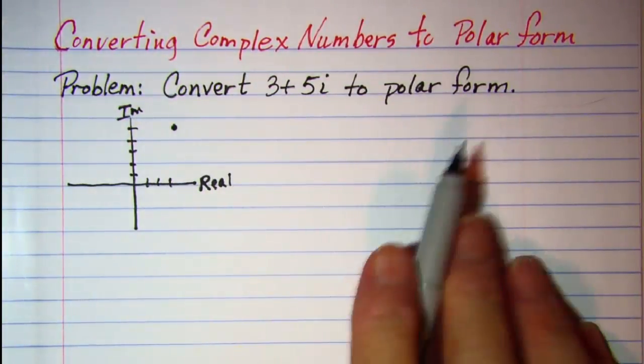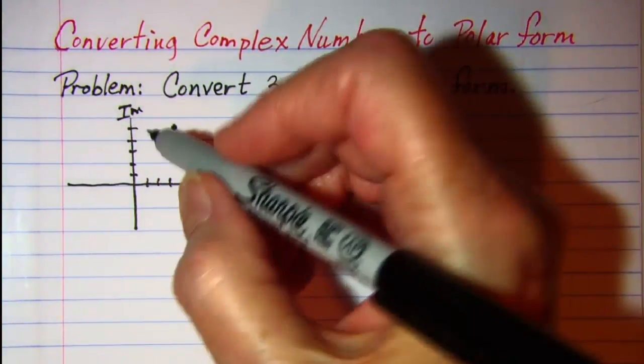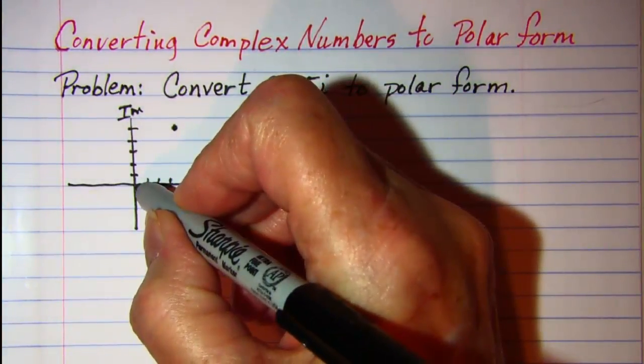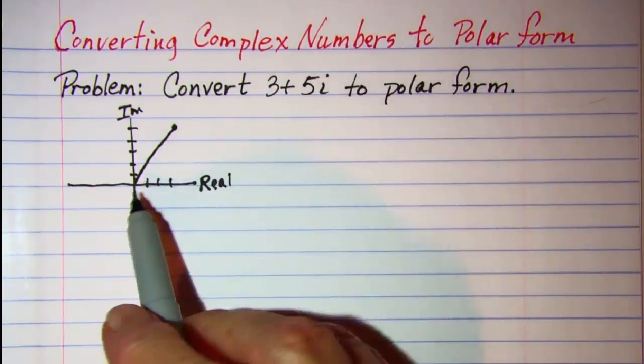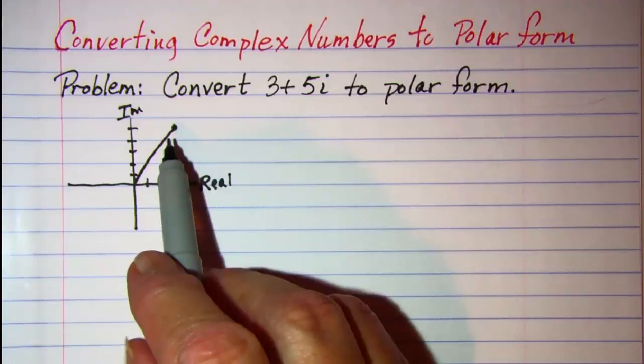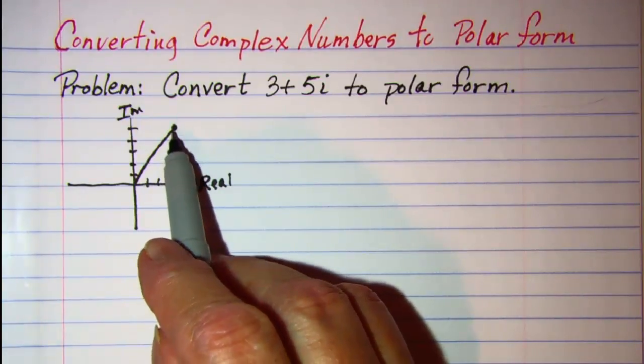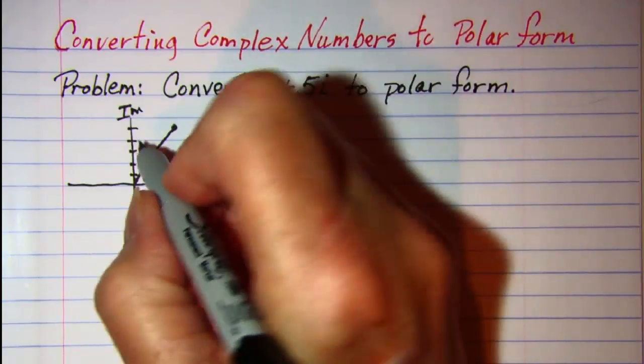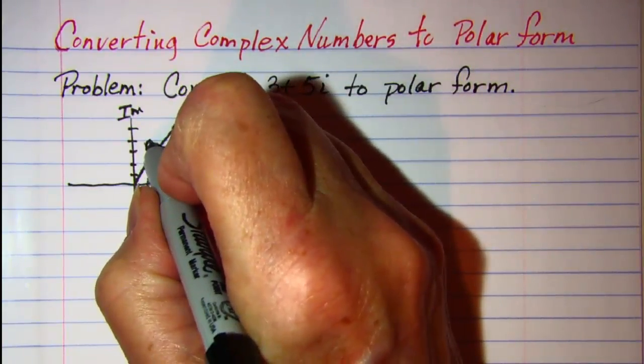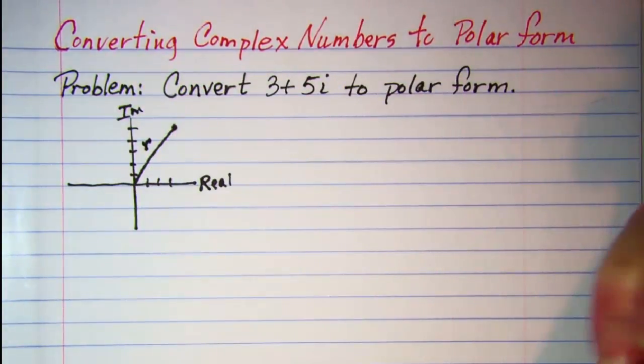Now to convert to polar form we want to look at the vector that has its initial point at the origin and its terminal point at 3 plus 5i and I want the length of that vector and I'll call it r.